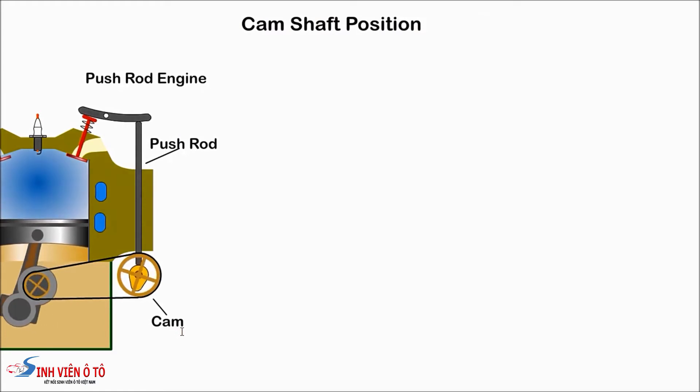There are various layouts for the camshafts. Early engines had the camshaft at the bottom of the engine. The valves were operated by push rods via rocker arms, hence the name push rod engine.